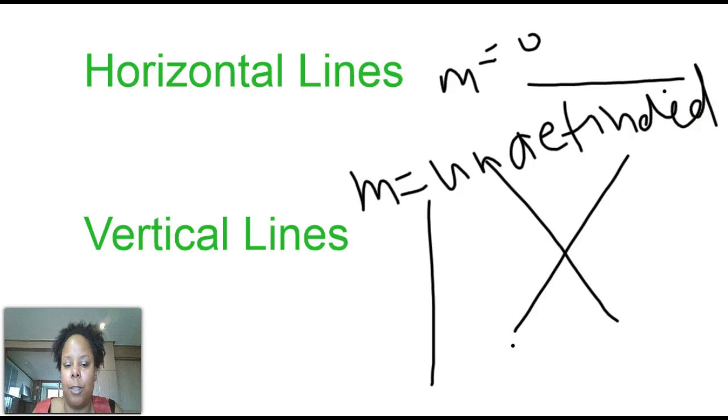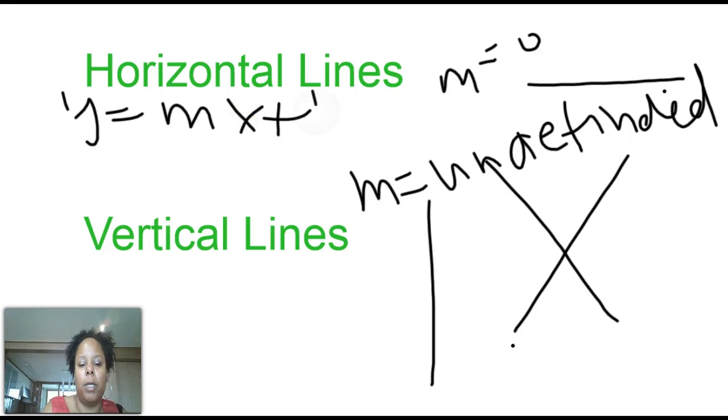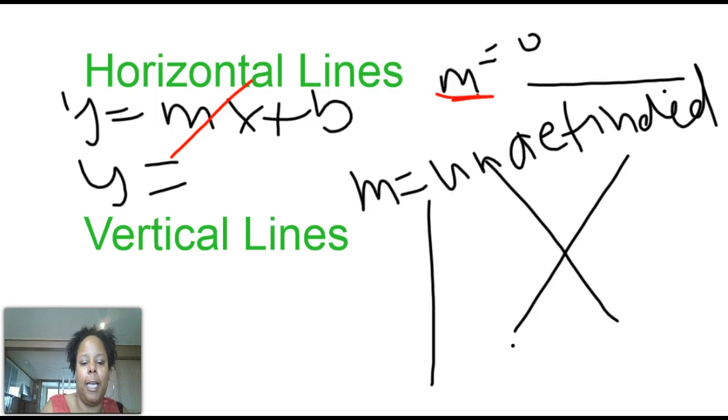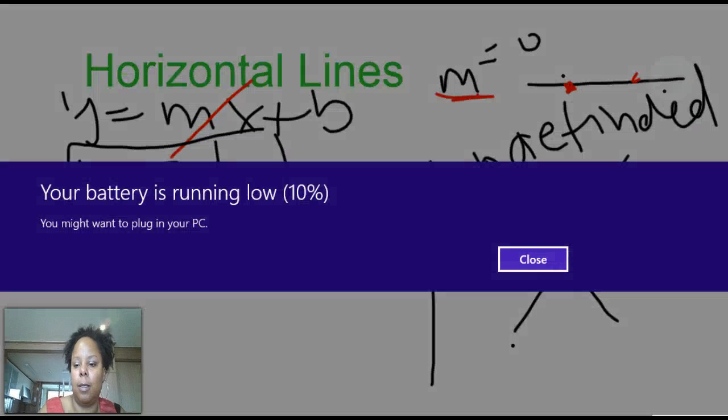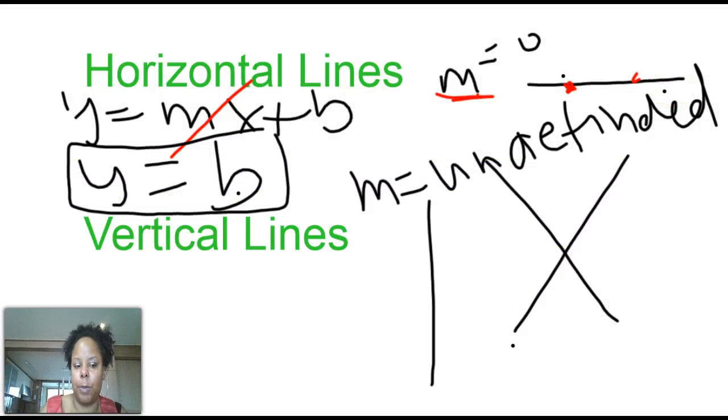Well, how does this translate to the equation of a line? Well, for a horizontal line, we can still use y equals mx plus b. But in this case, since our slope is zero, then this cancels out with a zero slope. And we just have y equals b. And that will represent the horizontal line that crosses the y-axis at b. In fact, every point on this line has coordinates where the y-value is b.